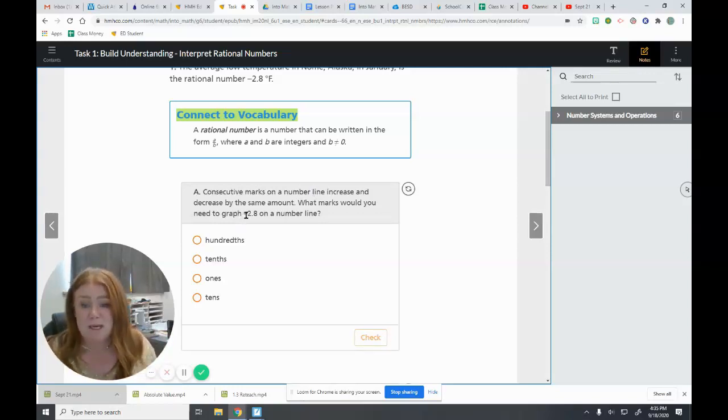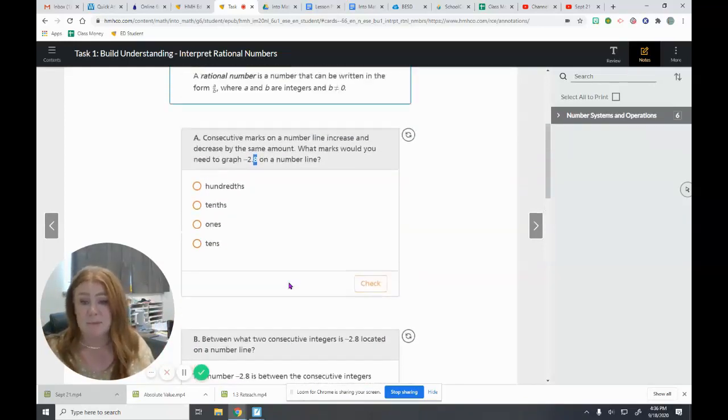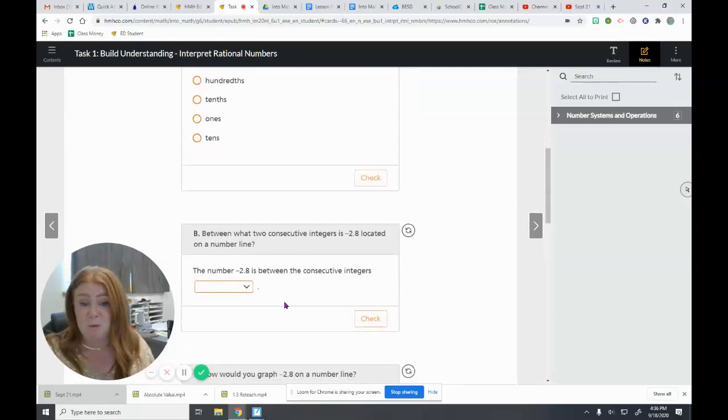So what marks would we need to make to graph negative 2.8 on a number line? The easiest way to think about this is to think about where is that decimal place, that eight. You can rewind the video and go look at that number line and the labels that we put on there. This eight is in the tenths place. So you would need everything to count by tenths to be able to mark exactly 2.8 on a number line.